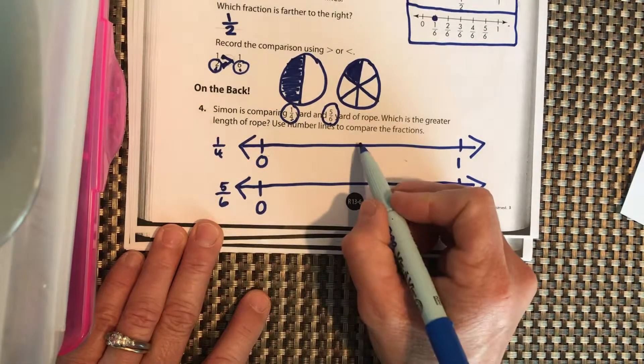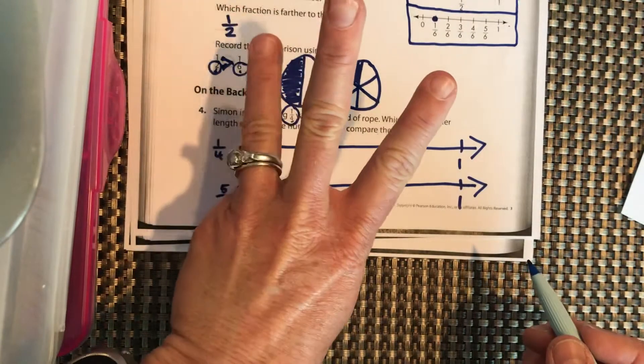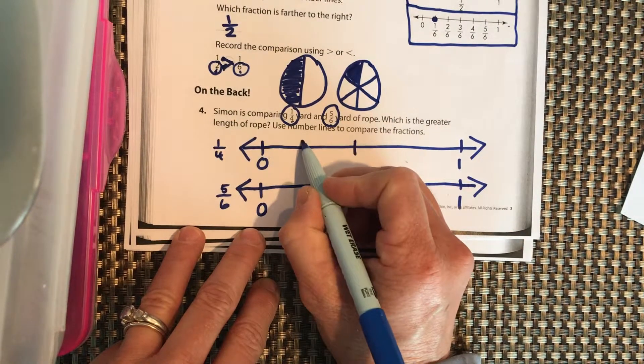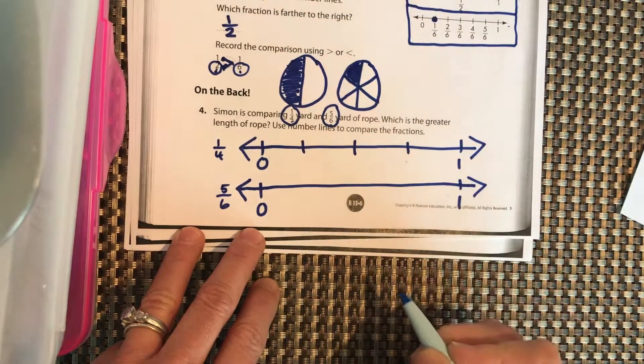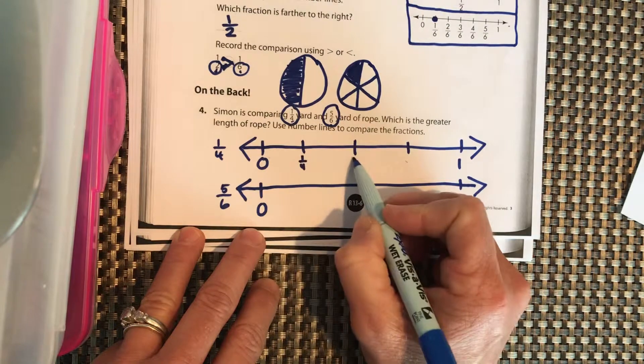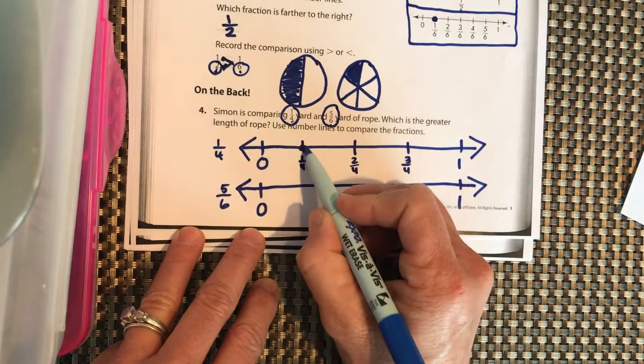So fourths should have been four parts, three lines. Three lines is odd so we can split it in half, split that in half, and split that in half. And this is 1/4, 2/4, 3/4, and 4/4. So 1/4 is right here.